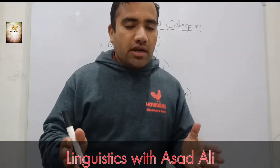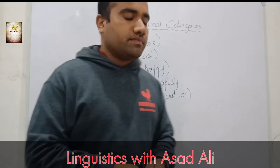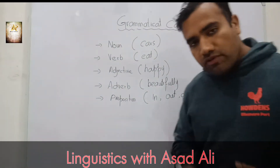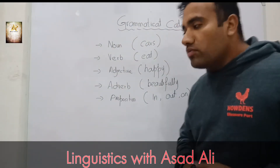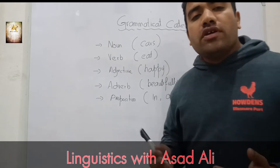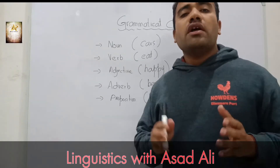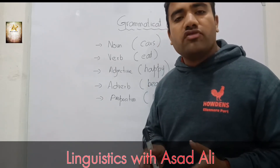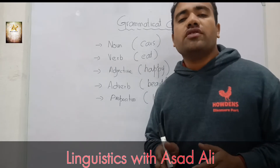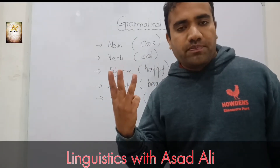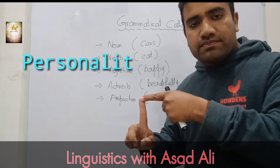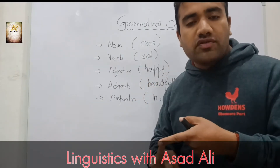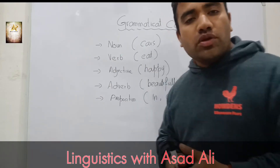What are the grammatical categories? The first type of grammatical category is the noun. In every language, noun refers to entities, and entities are basically three types: personalities, places, and things. These are the entities, and noun denotes the entities.